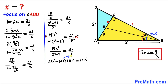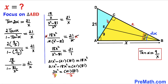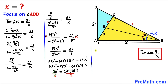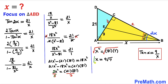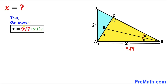Moving terms: 21x squared minus 18x squared equals 21 times 81, giving 3x squared equals 21 times 81. Dividing both sides by 3, we get x squared equals 7 times 81. Taking the square root of both sides, x equals 9 times the square root of 7. So our answer is x equals 9√7 units, which is approximately 23.8 units.